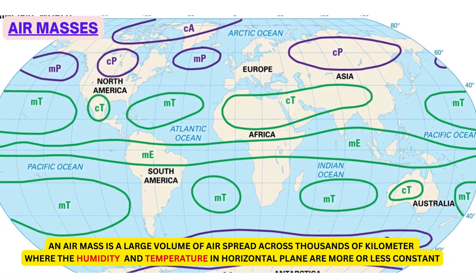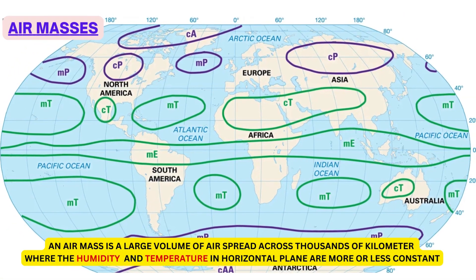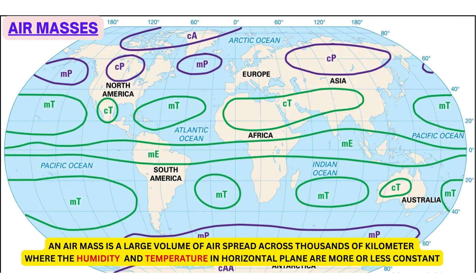An air mass is a large volume of air spread across thousands of kilometers where the humidity and temperature in the horizontal plane are more or less constant. Vertically, they extend up to the tropopause.